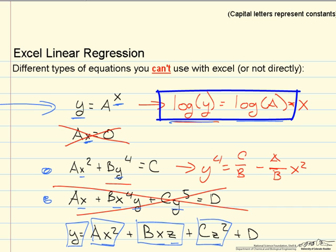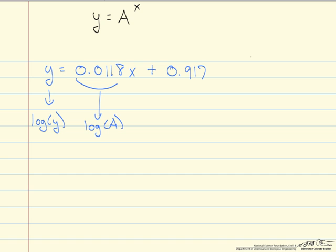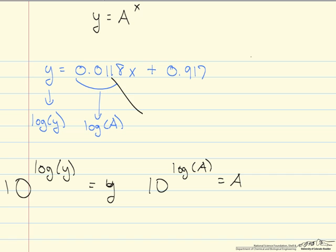So what we need to do is we need to take it back to its original form. So here log(y) is y. So basically to return a log(y) to y, we just take it to a 10. We need to do the same thing for log(A): 10^(log(A)) = A. So if we take this value, 10^0.0118 equals roughly 1.027.